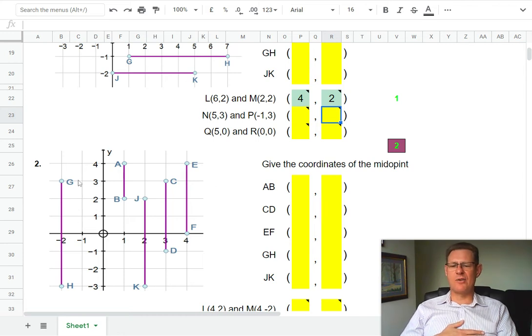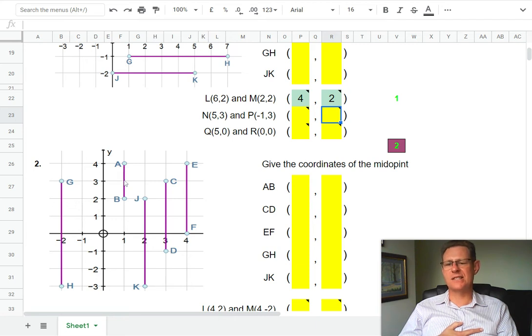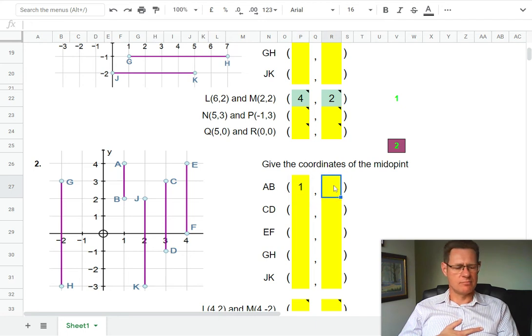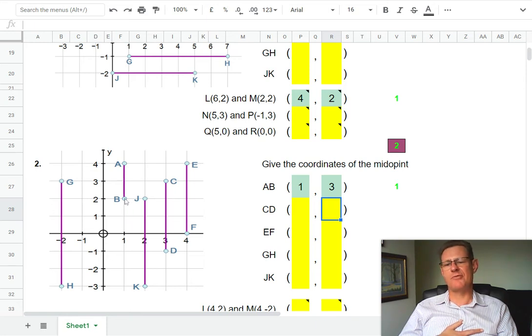Now number two, we have vertical lines. Let's take A and B. In the middle, you can see that's pretty obviously right there where my mouse is pointing—one across and three up. So we're going to put one here and three. If you think about what's happening here, the x coordinate has stayed the same for B and A and the midpoint. But the y coordinate has gone from two to four. It's halfway between two and four, but it's also the average. That's what halfway is. So two plus four is six, and half of six gives you three. It's another way of doing it.